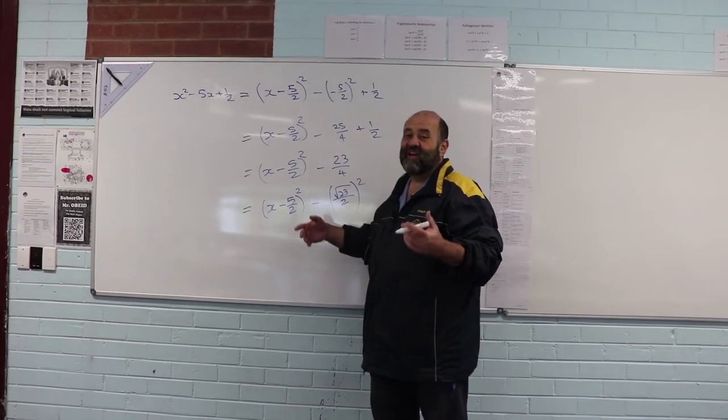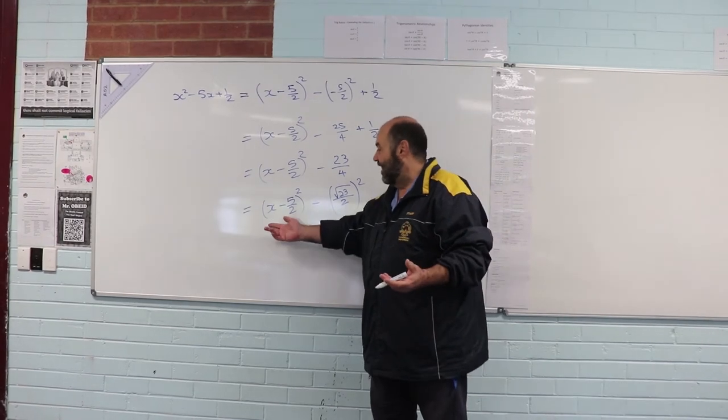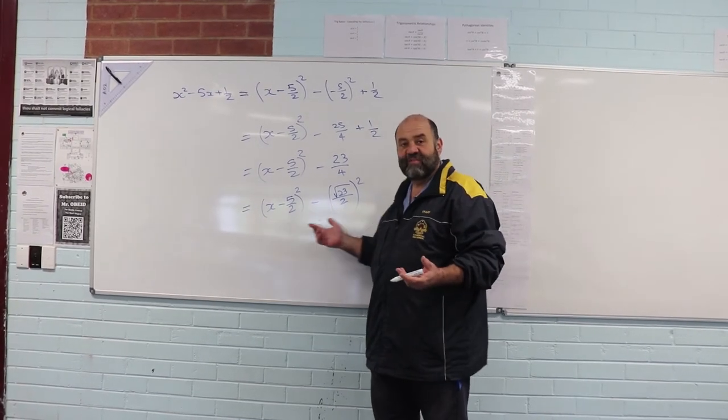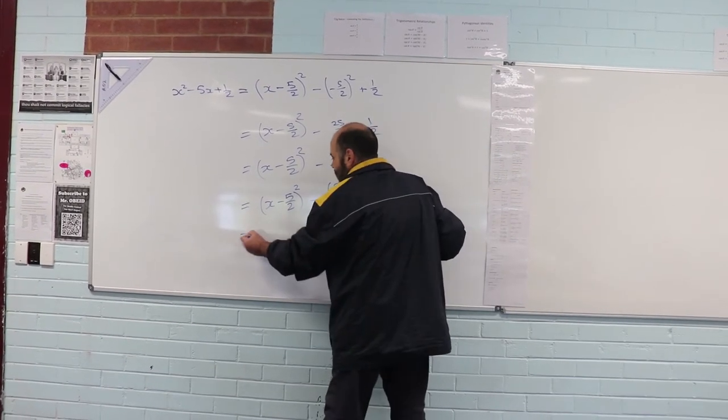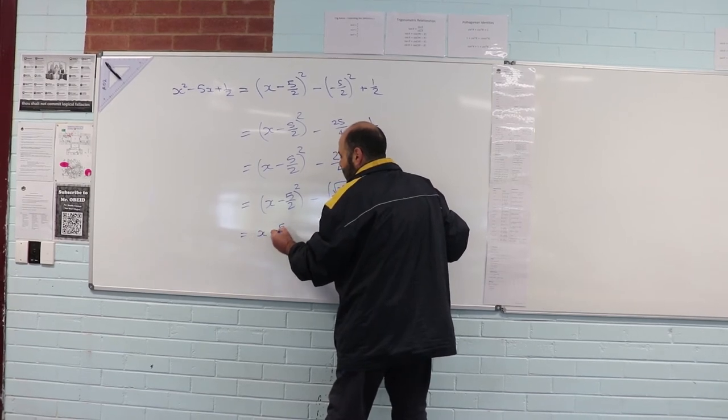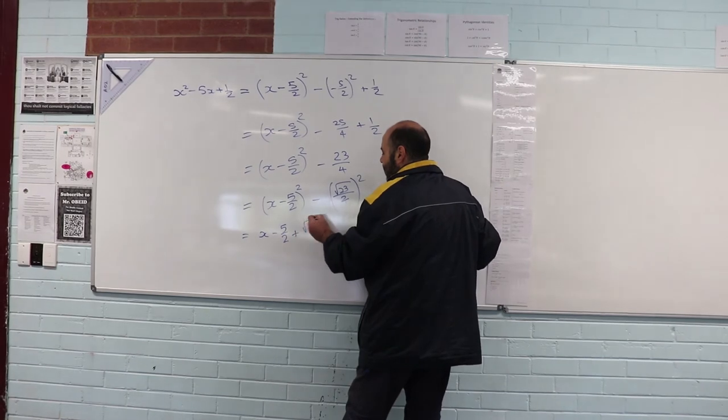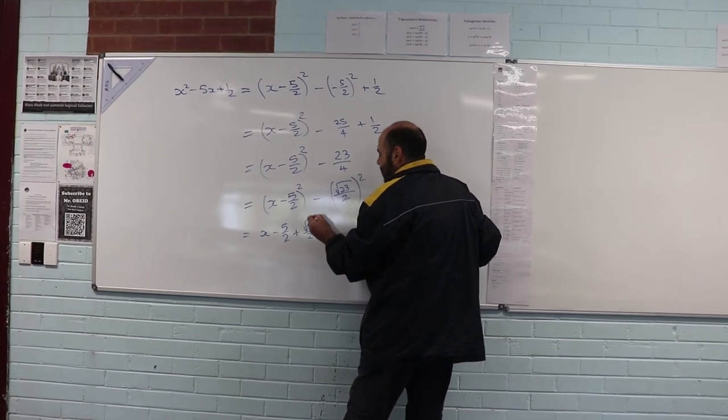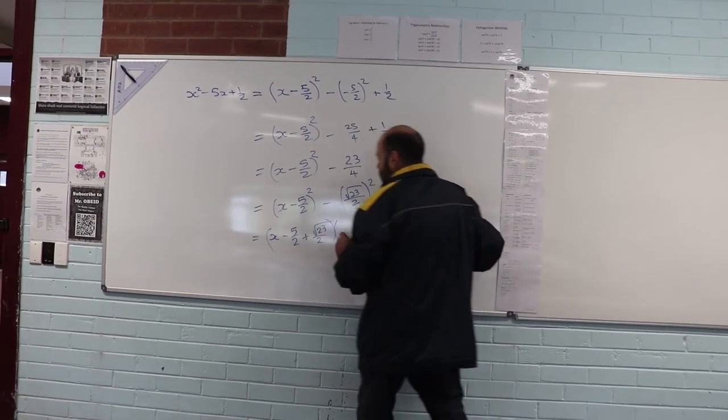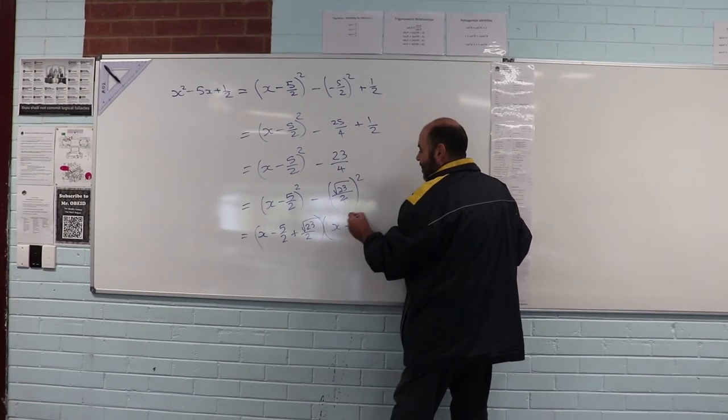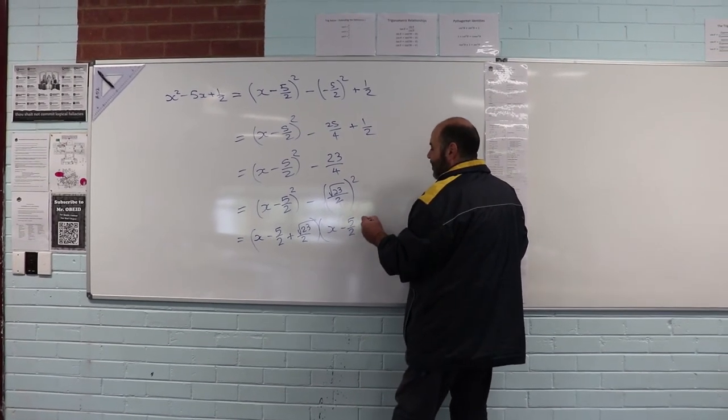I've now got my difference of two squares. And then I just proceed as normal: a plus b, a minus b. That's (a + b)(a - b).